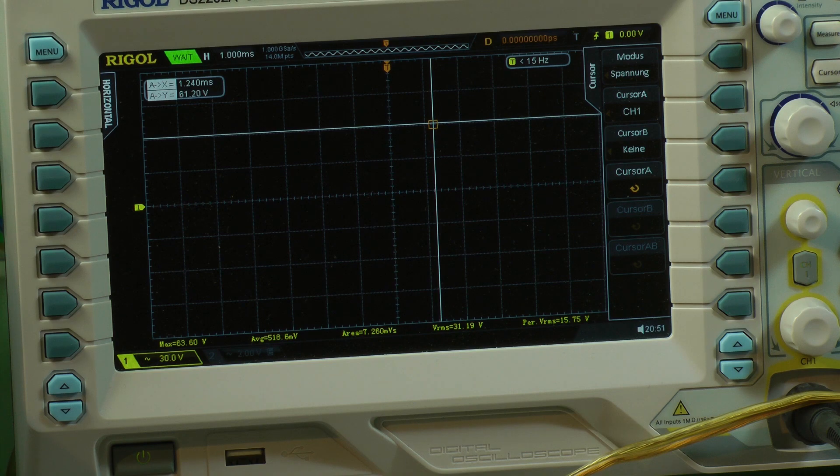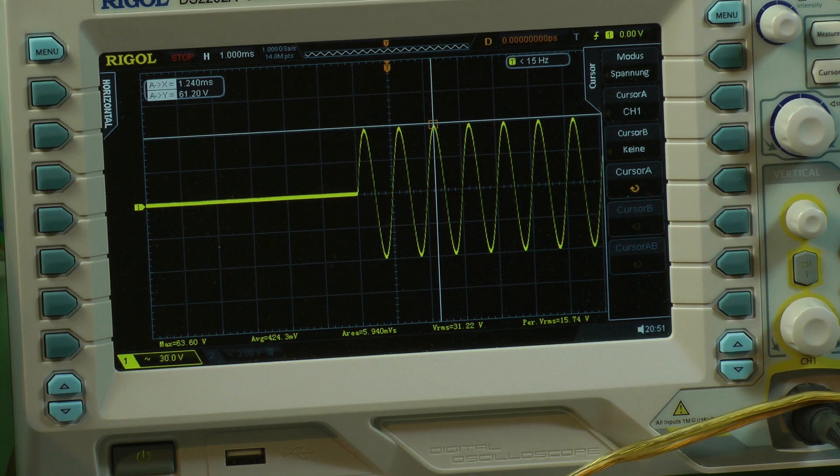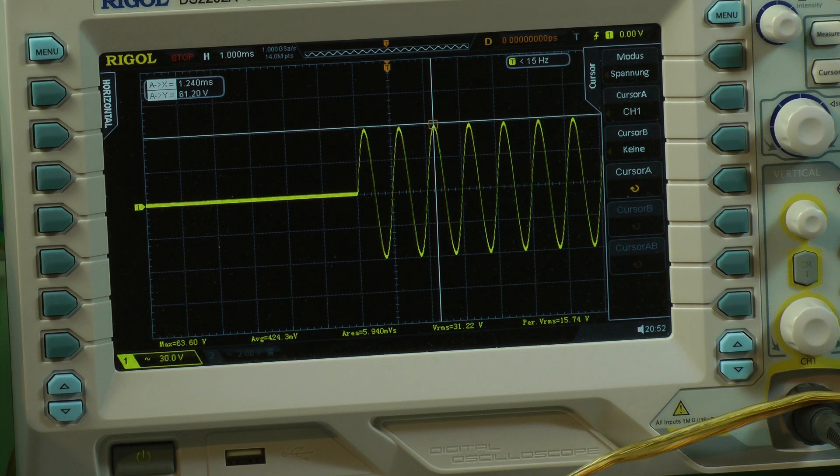Mono 2 ohms dynamic power. We have output voltage on cycles the same level of 61.2 volts. This is an RMS voltage of 43.27 volts RMS, which equals, believe it or not, 936 watts of dynamic power mono 2 ohms.